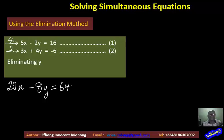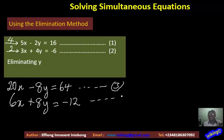Next, I'll multiply equation 2 by 2. 2 times 3X will give me 6X, and 2 times 4Y will give me 8Y. And then 2 times minus 6 will give me minus 12. If you like, you can call this equation 3. If you like, you can call this equation 4.